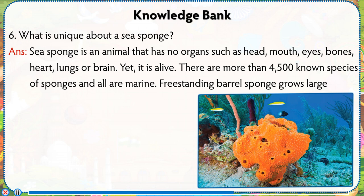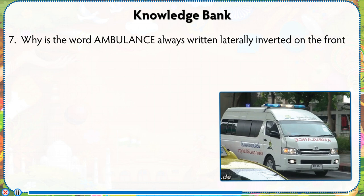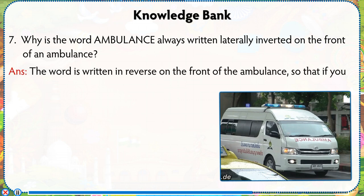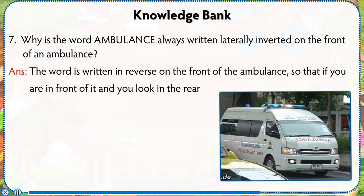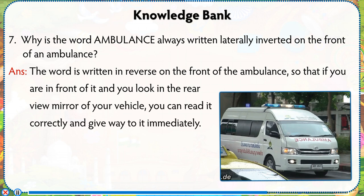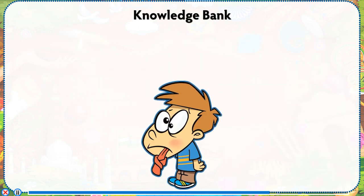Free-standing barrel sponge grows large enough to fit a human inside. Why is the word ambulance always written inverted on the front of an ambulance? Answer: The word is written in reverse on the front of an ambulance so that if you are in front of it and look in the rear view mirror of your vehicle, you can read it correctly and give way to it immediately.